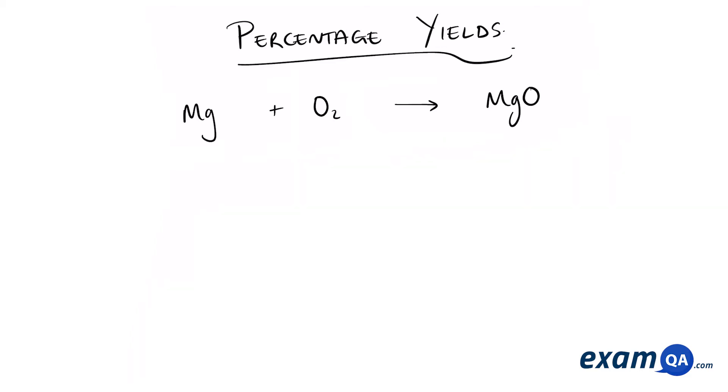Let's have a go at calculating percentage yield. Suppose the question says, if we had 48 grams of magnesium, what mass of magnesium oxide would we produce? This is a basic reacting masses question. First of all, you want to make sure the equation is balanced. Next, we're going to use our knowledge of reacting masses to calculate the mass of magnesium oxide produced.